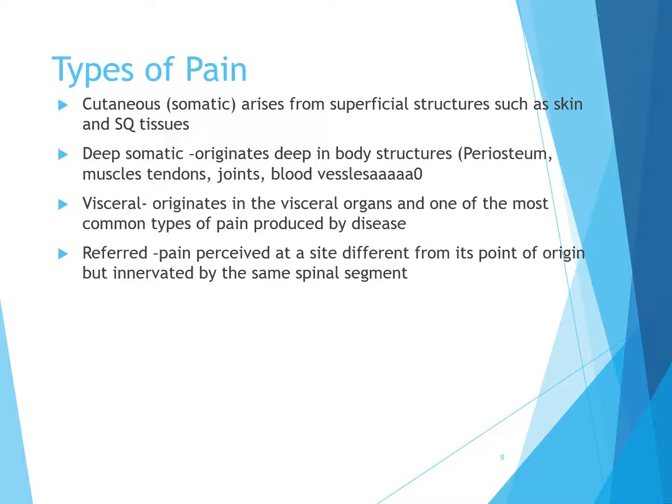Cutaneous or somatic pain arises from superficial structures such as skin and subcutaneous tissues — a paper cut is an example. Deep somatic pain originates deep in the body structures: the periosteum, muscles, tendons, joints, and blood vessels, stimulated by strong pressure on bones, ischemia, or tissue damage. Visceral pain originates in the visceral organs and is one of the most common types of pain produced by disease.